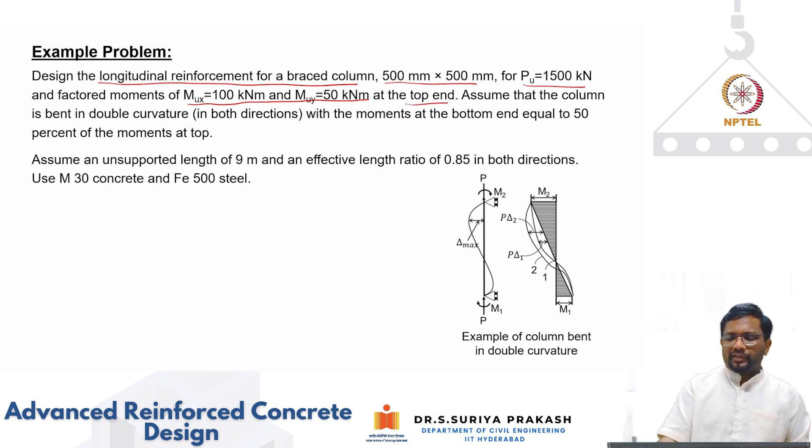What we are saying is this column is going to bend in double curvature like this and you see this is a bending moment that we are having, m2 and m1. Now you have bending moment about both axes. This is a slender column that is subjected to biaxial bending moment also with the bottom moments.